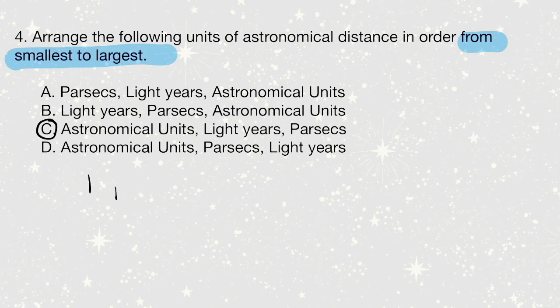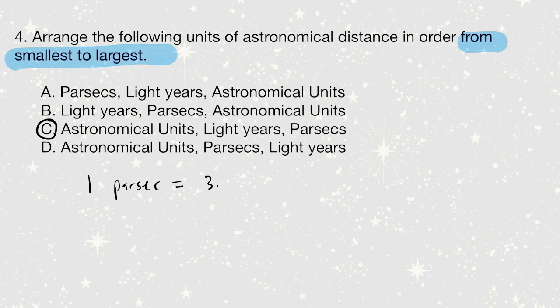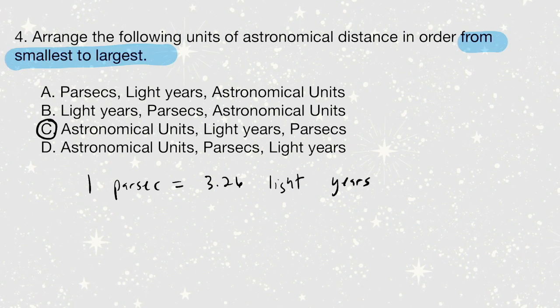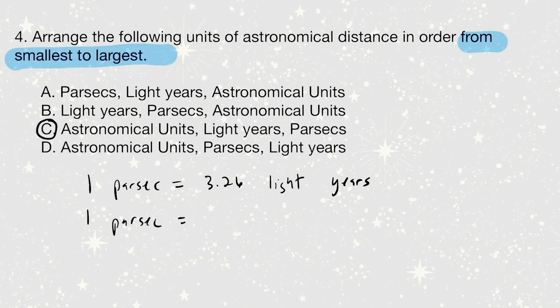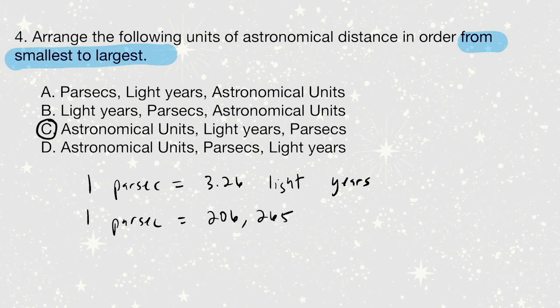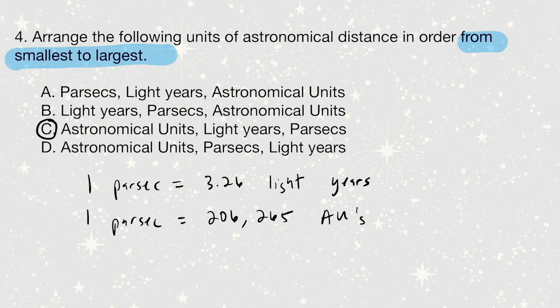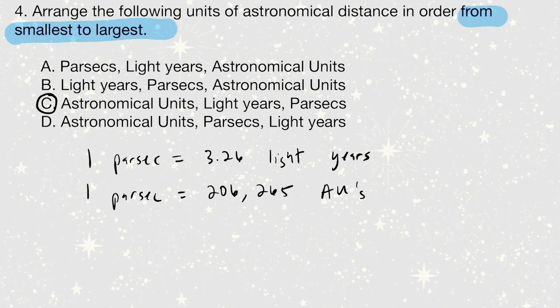It actually turns out that one parsec is equal to 3.26 light years. And one parsec is also equal to 206,265 astronomical units. And so therefore, we can literally and clearly see that the parsec is the largest and the astronomical unit is the smallest.